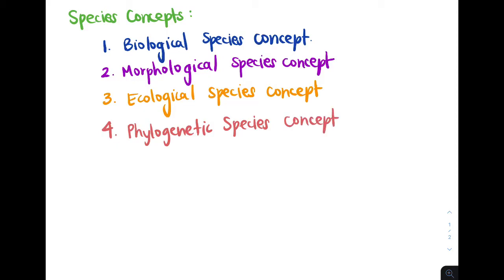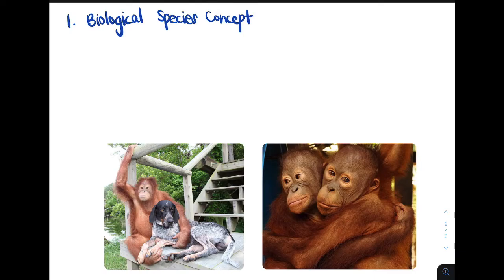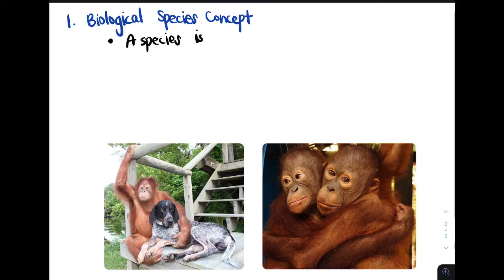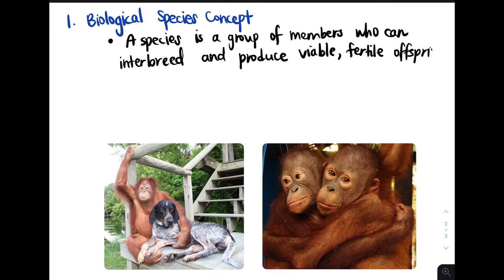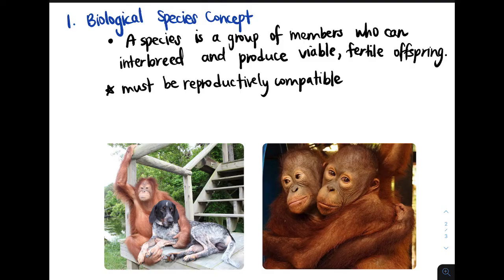Let's start with the biological species concept. This concept says that a species is a group of members who can interbreed and produce viable fertile offspring. But if they breed with members of other groups, they do not produce viable fertile offspring. So the key phrase here is viable and fertile. This concept tells us that members of a biological species must be reproductively compatible.